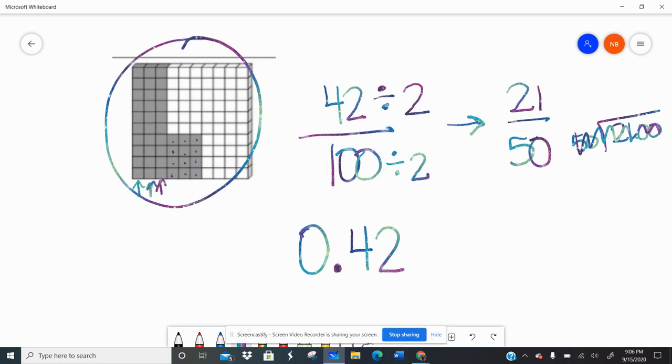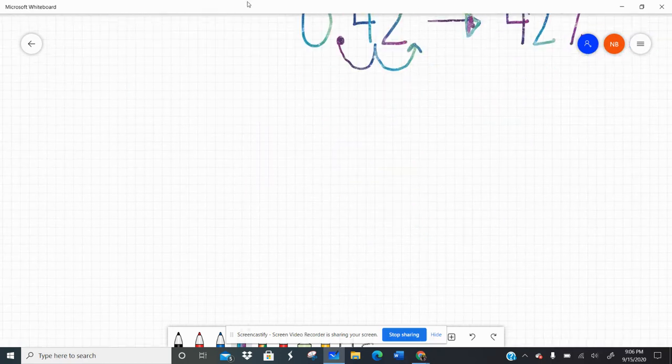So we need to know how to kind of work the system so that we're not working too hard. If we want to go to a percent, we just go 1, 2. 42 hundredths is 42 percent. So yes, we had to simplify the fraction to find an equivalent fraction that was smaller, but we could use the original fraction to come up with that decimal and then the percent. So work smarter, not harder.